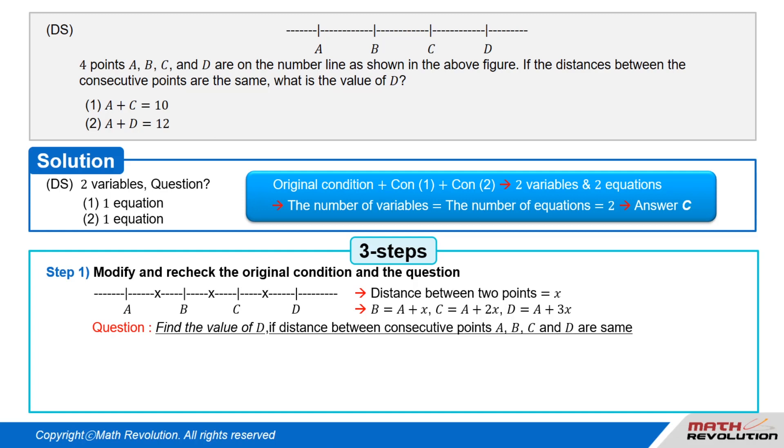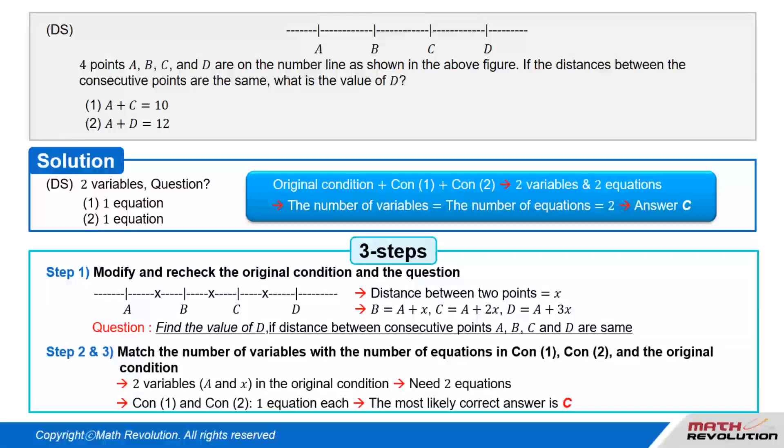We have to find the value of D. If the distances between the consecutive points A, B, C, and D are the same, follow the second and the third step.